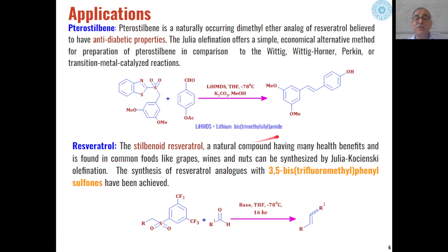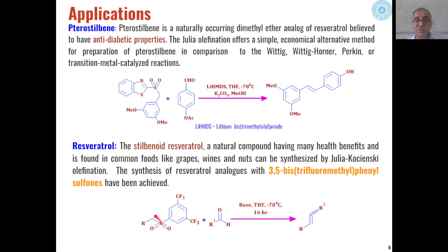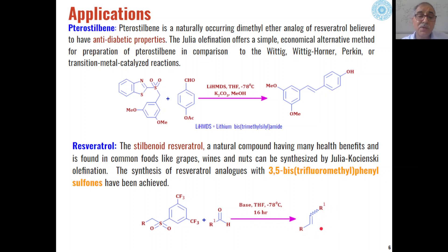Similarly, the hydrolyzed product of pterostilbene — resveratrol — can also be synthesized through Julia olefination reactions using 3,5-bis(trifluoromethyl)phenyl sulfone derivatives on reaction with aldehydes or ketones in the presence of strong bases such as lithium or sodium bis(trimethylsilyl)amide, which leads to the formation of resveratrol as the product.